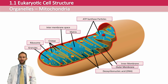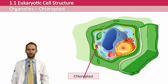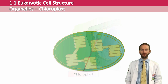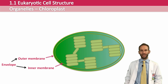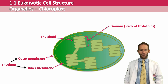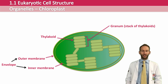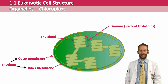Another very important organelle, found only in plants, is the chloroplast — where photosynthesis takes place. Chloroplasts contain chlorophyll, the green pigment needed for photosynthesis. They are double membrane organelles, and the inner membrane is highly folded into thylakoids, which are stacked into individual grana, providing a large surface area for photosynthesis reactions. The grana are linked via lamellae, and the fluid filling the inner membrane of the chloroplast is called the stroma.